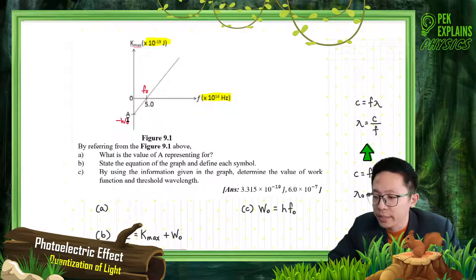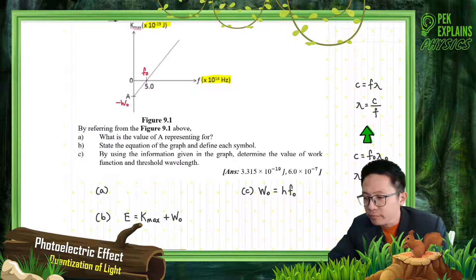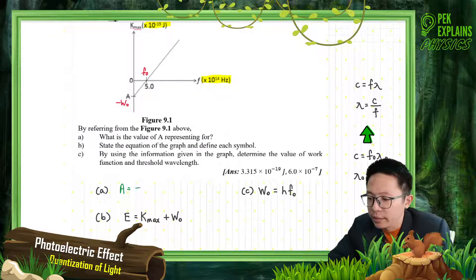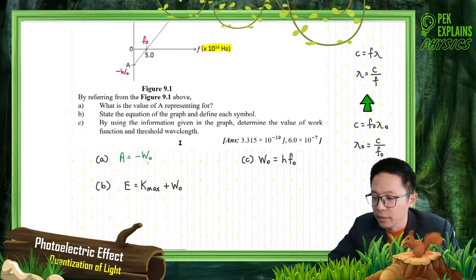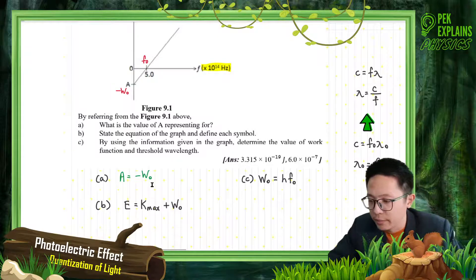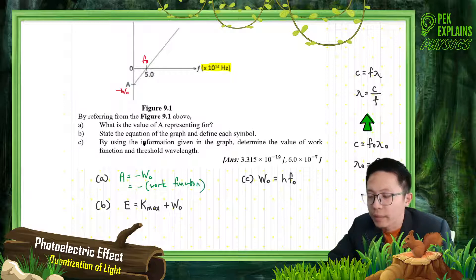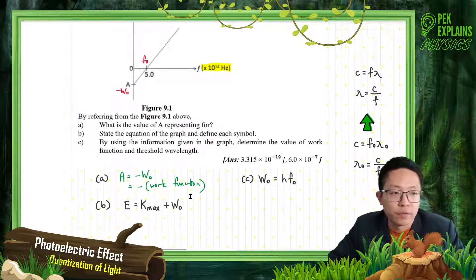So, what is the value of A representing? A is actually negative W0. Negative W0. Or you can write in words: negative work function.